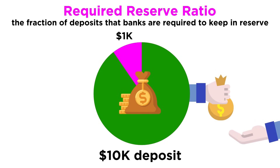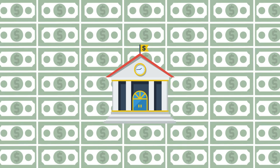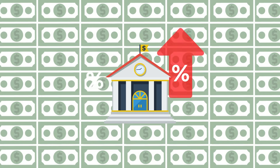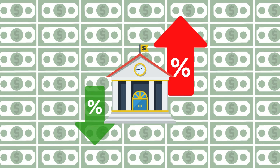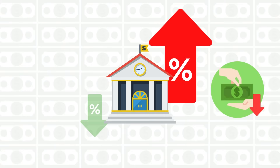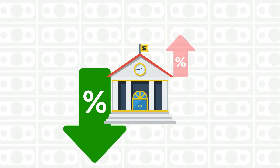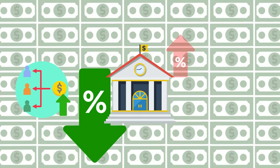Banks can also influence how much money is in circulation by controlling how high or low interest rates are. In general, the higher interest rates are, the less people are borrowing money, since that means they'd have to pay back more interest down the road. However, if interest rates are low, more people would be willing to take out loans, and therefore more money would be in circulation.